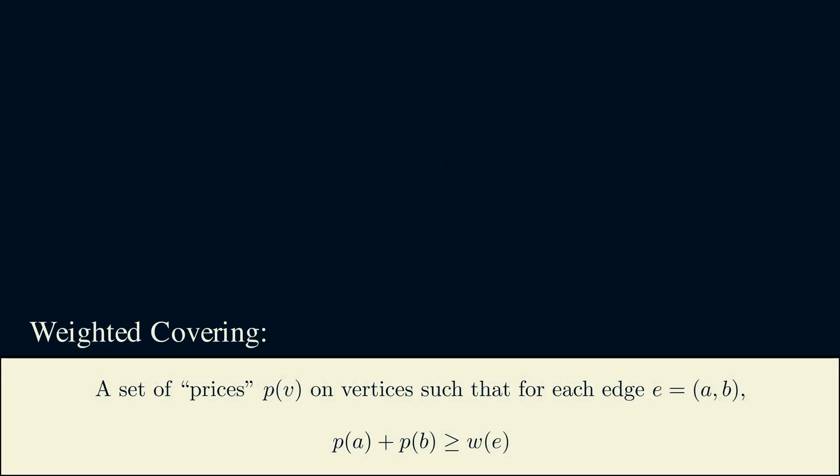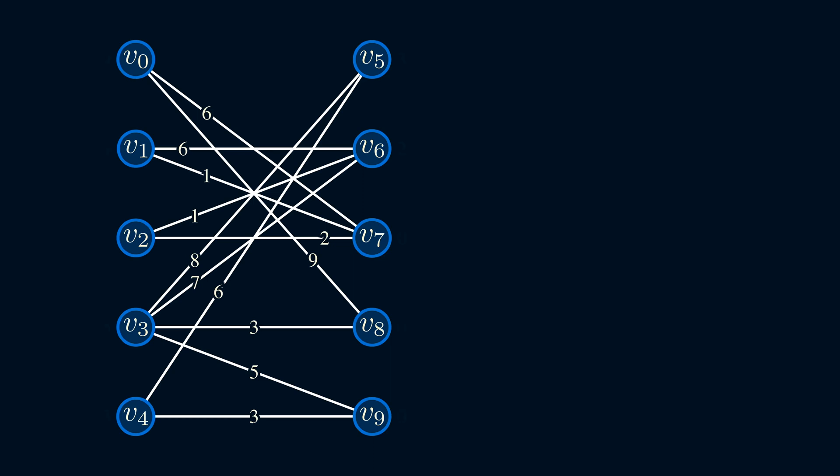The definition of weighted covering does actually generalize vertex cover. For this graph, if we set the edge weights to one and find a maximum weight matching, then we get a maximum size matching. Since the weights are all one, the prices just need to be zero or one. This is one possible set of prices that we can have. Now, we can map the prices to a vertex cover. The vertices with the price of one are the ones in the vertex cover. I also mentioned before that a maximum matching can't have both of its endpoints in a minimum vertex cover, so we know that this edge can't be in a maximum matching. The maximum matching has to be these two edges. In the context of prices, the edges that remain are precisely the ones where the sum of the prices is equal to the edge weight. The same idea extends to weighted graphs as well.